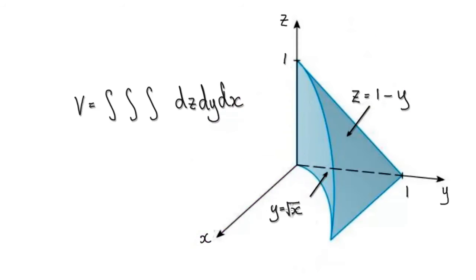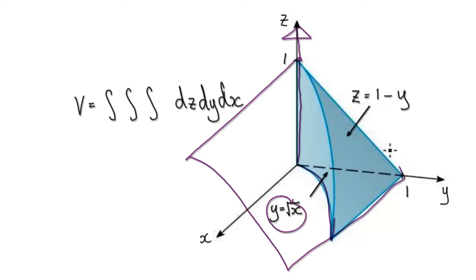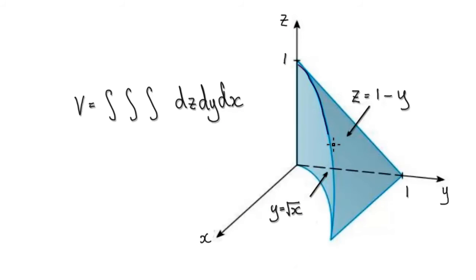If you look at y equals square root of x — that's this line here — if you shoot vertically straight up in the z-direction, where the square root intersects with that plane, it's going to be along this line here. So now it forms a 3D solid, and our job is to work out the volume of this 3D solid.